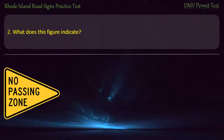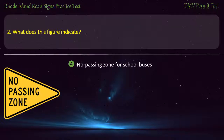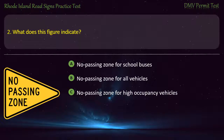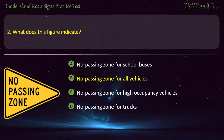Question 2. What does this figure indicate? No passing zone for school buses. No passing zone for all vehicles. No passing zone for high occupancy vehicles. No passing zone for trucks. Answer: No passing zone for all vehicles.